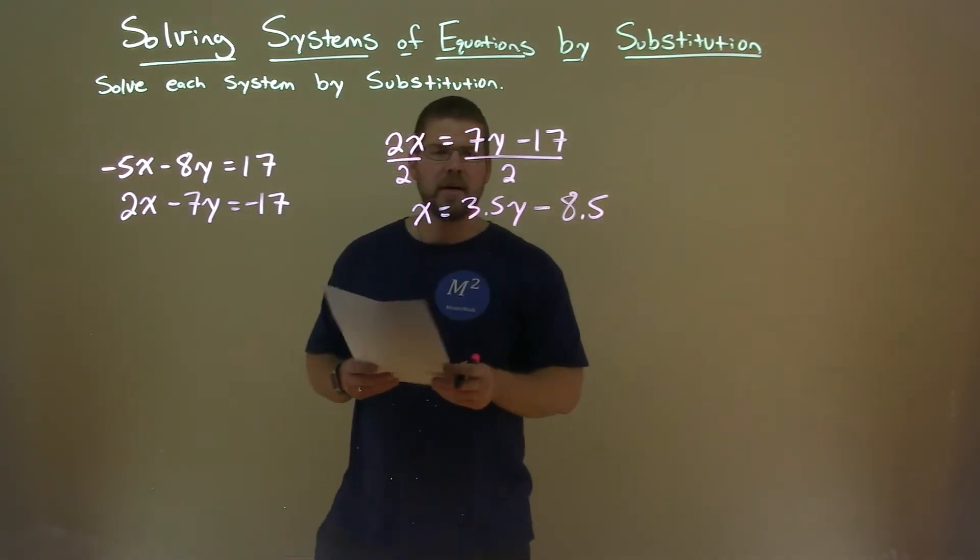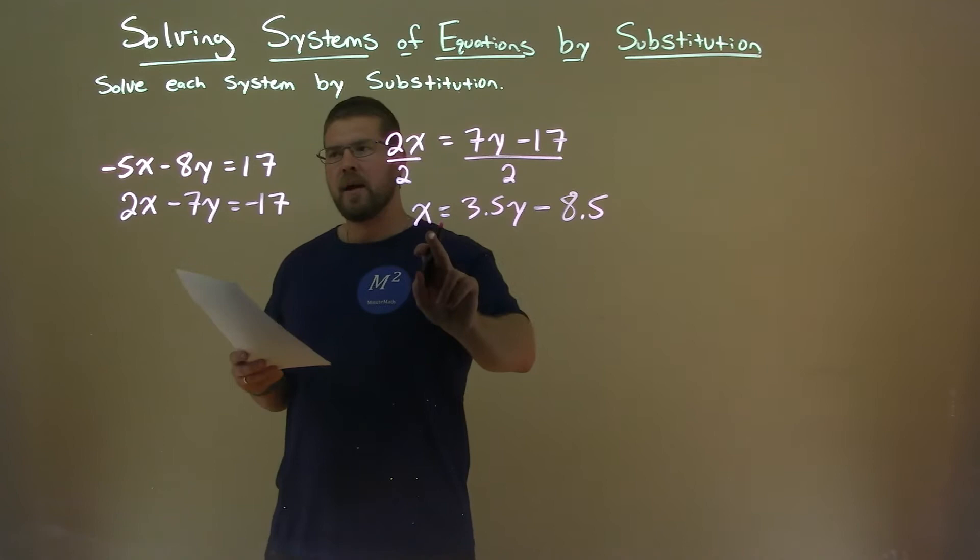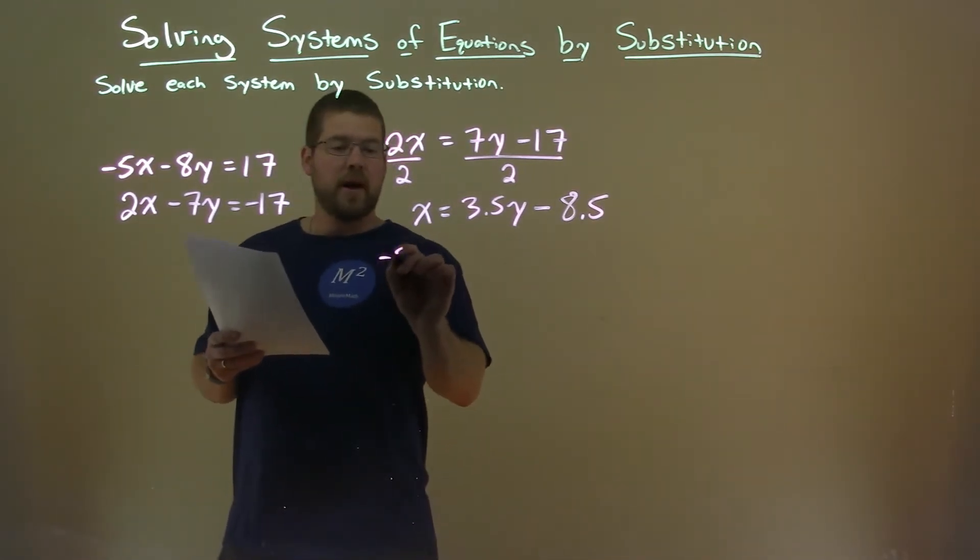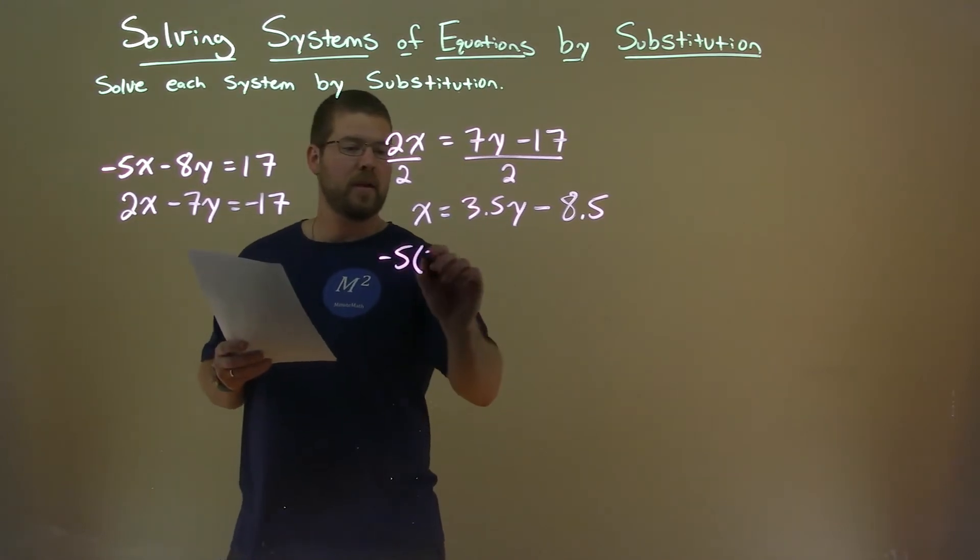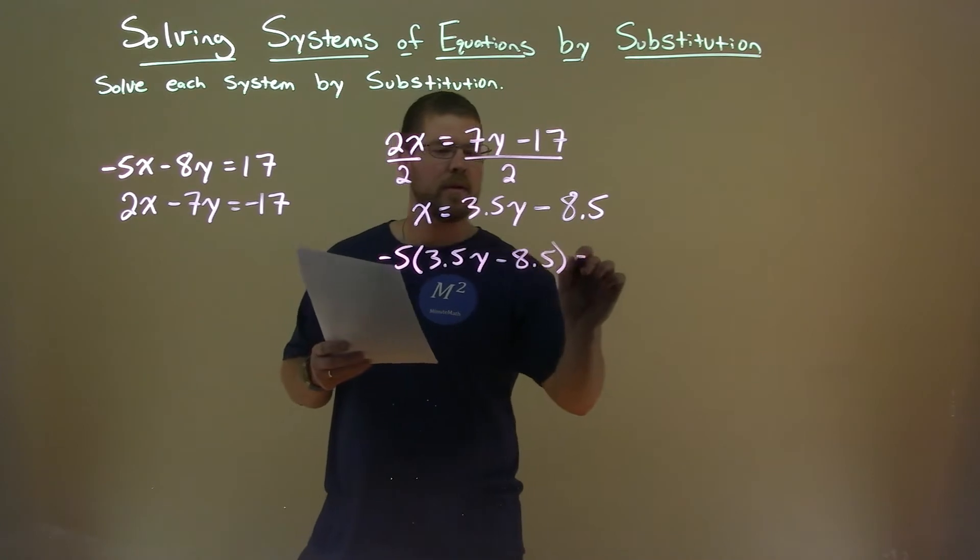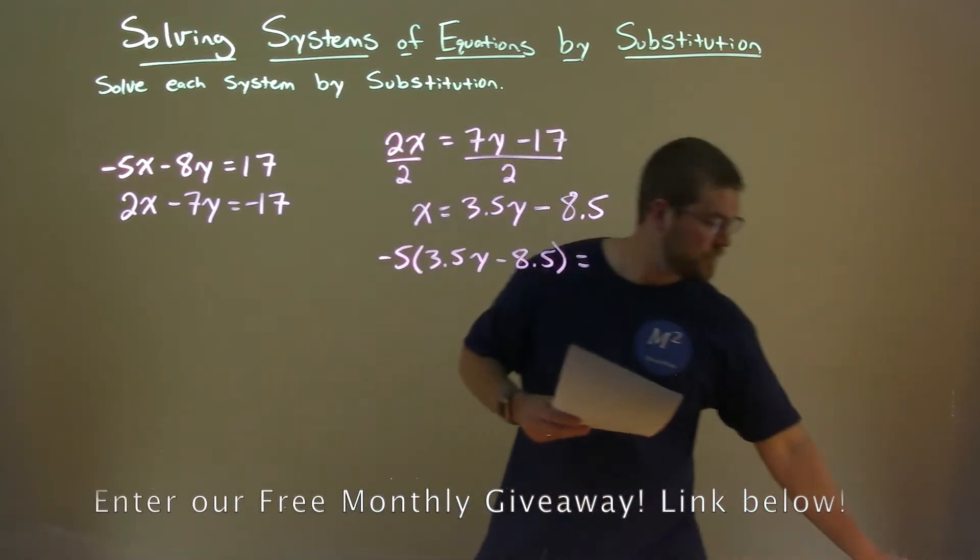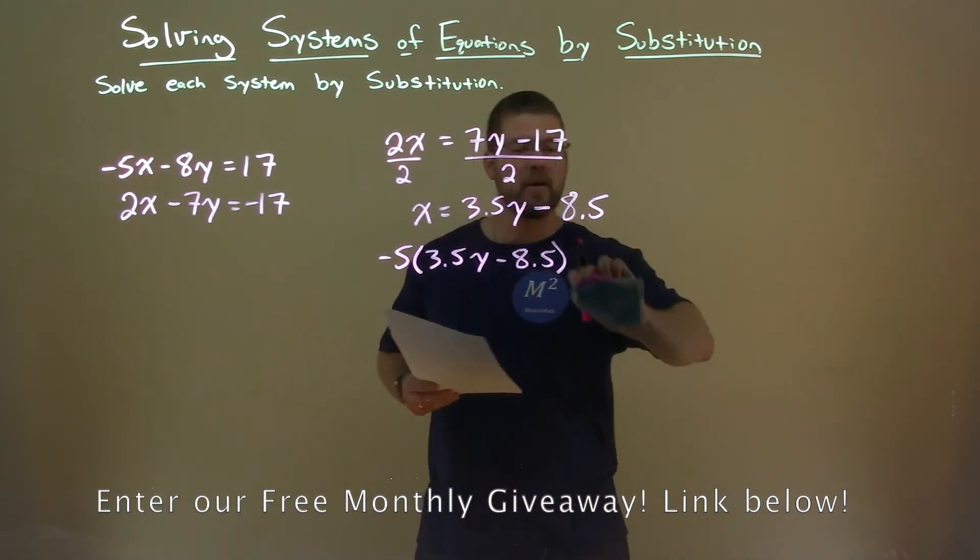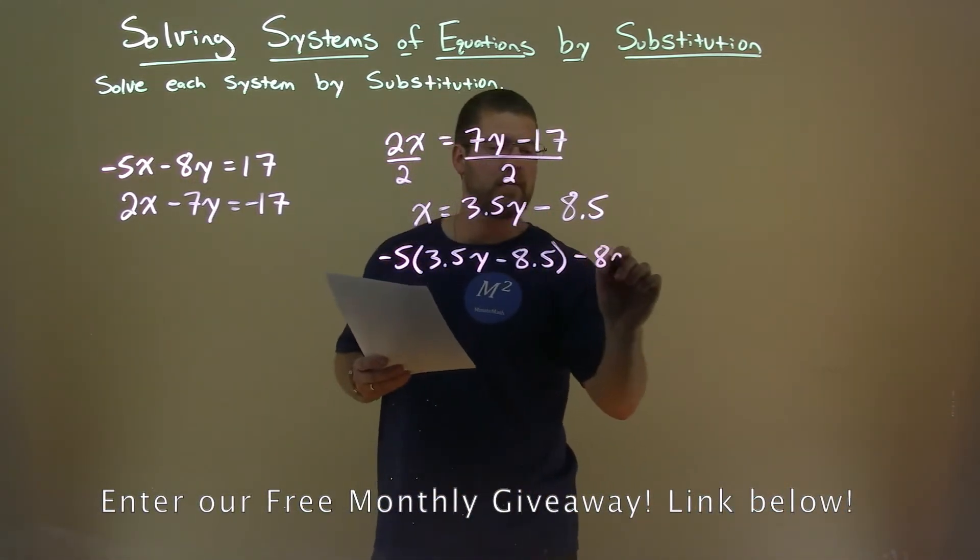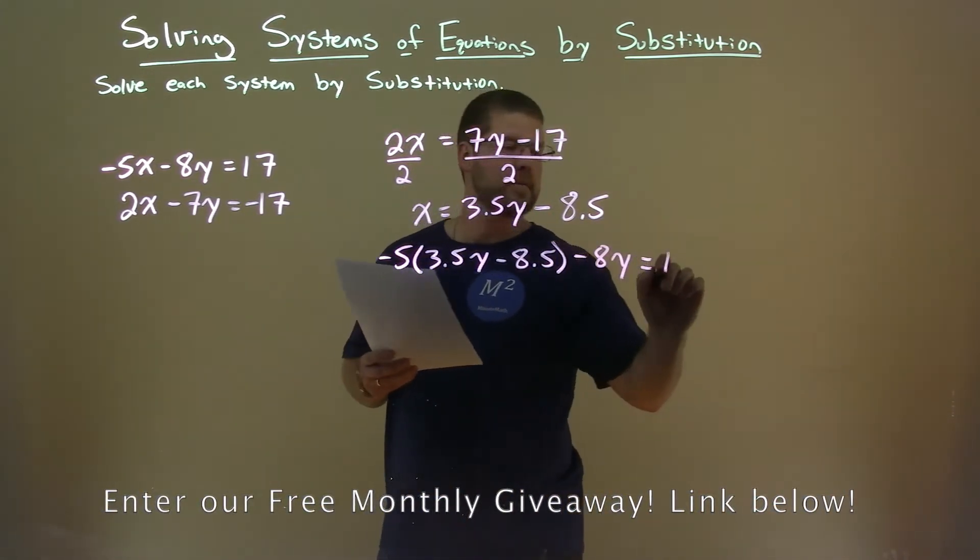So now from there, we're going to take that information, that value for x, and plug it into x in our first equation. So we have a -5 here, and instead of x, I'm plugging in 3.5y - 8.5, and that, oops, not equals. Finish the equation out there, Sean.